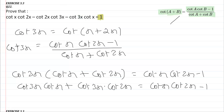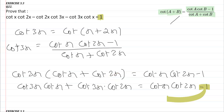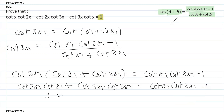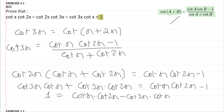Now when we look at our proof we need positive 1 on one side, so I'm transposing minus 1 to the left hand side — it becomes positive 1 on the left. The remaining terms are transposed to the right hand side, giving us: 1 equals cot x into cot 2x minus cot 3x into cot x minus cot 3x into cot 2x.